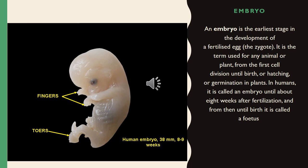An embryo is the earliest stage in the development of a fertilized egg. It is the term used for any animal or plant from the first cell division until birth, hatching, or germination in plants. In humans, it is called an embryo until about eight weeks after fertilization, and from then until birth it is called a fetus.